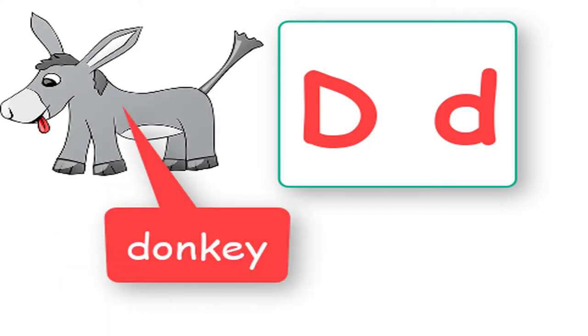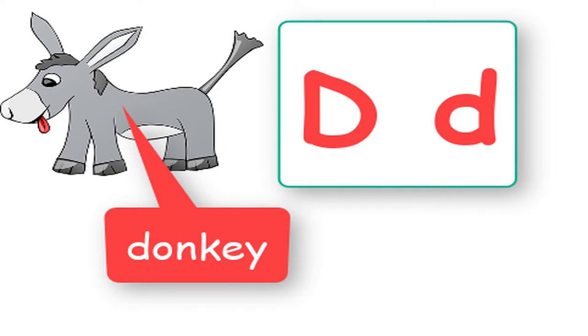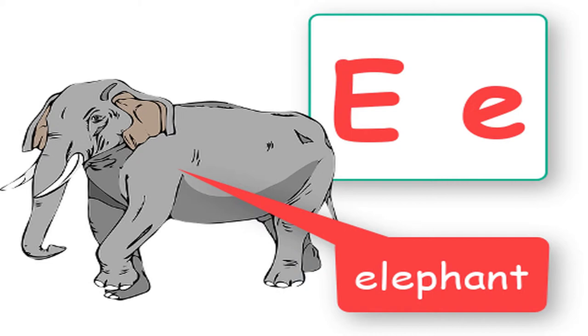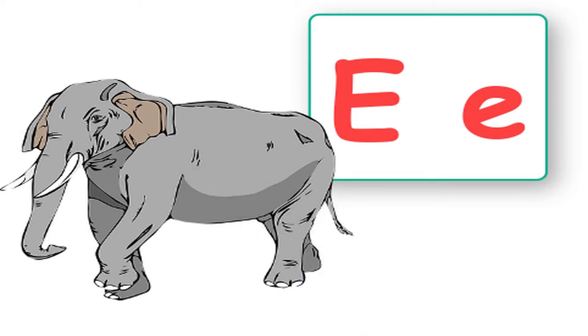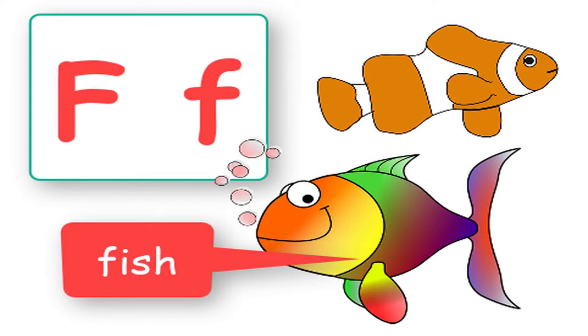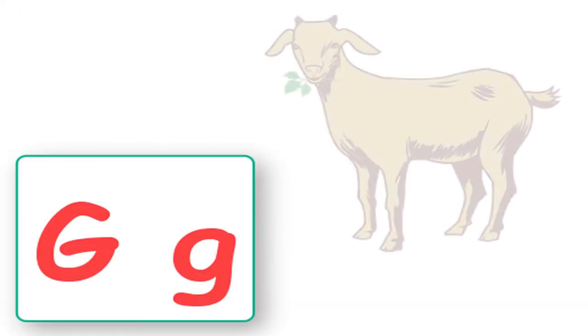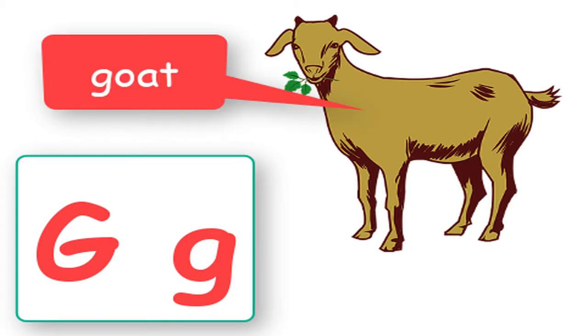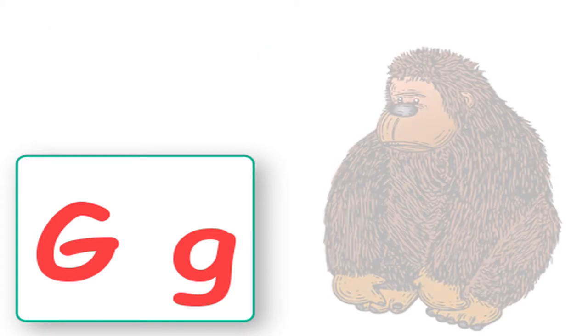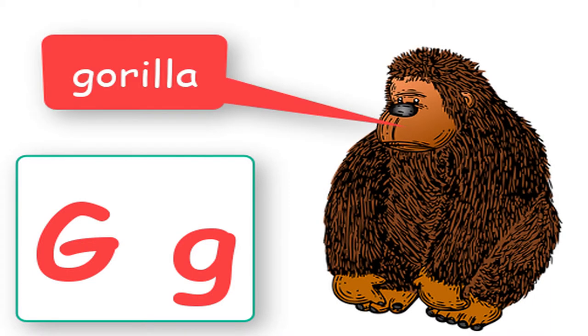D says donkey, donkey. E says elephant, elephant. F says fish, fish. G says goat, goat. G says gorilla, gorilla.